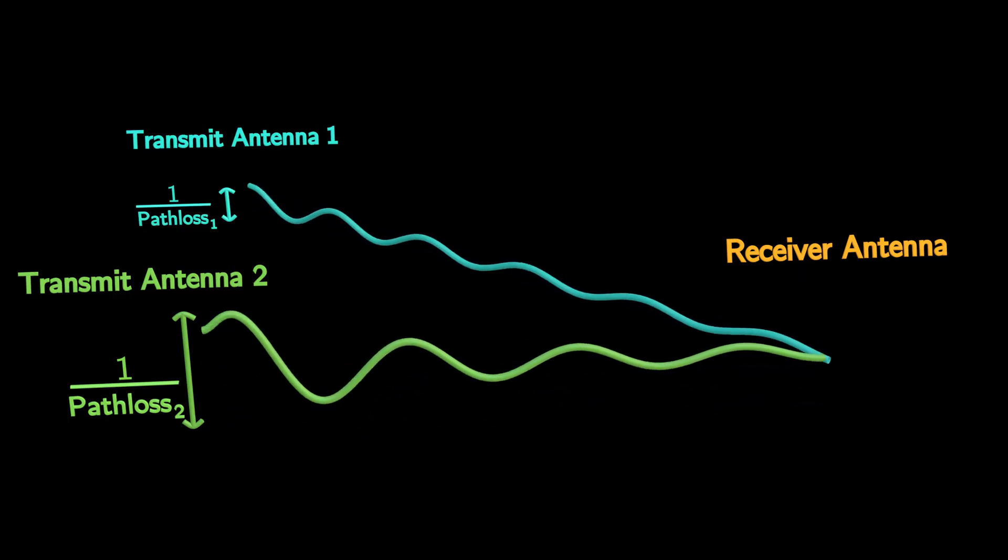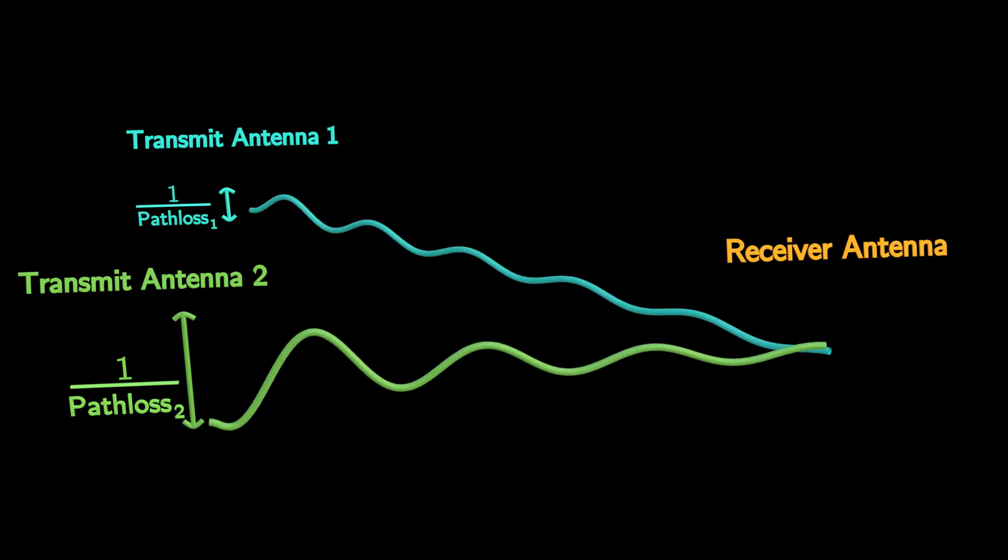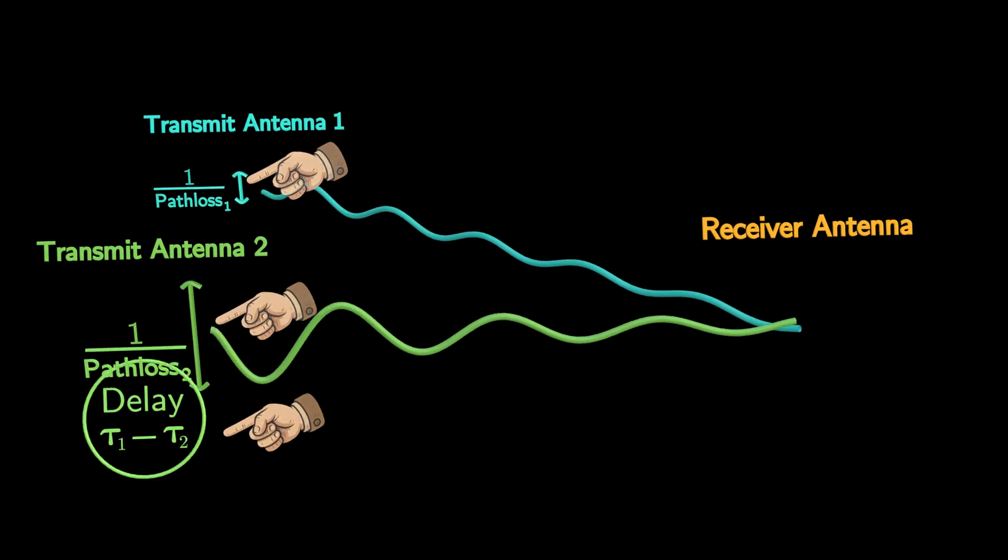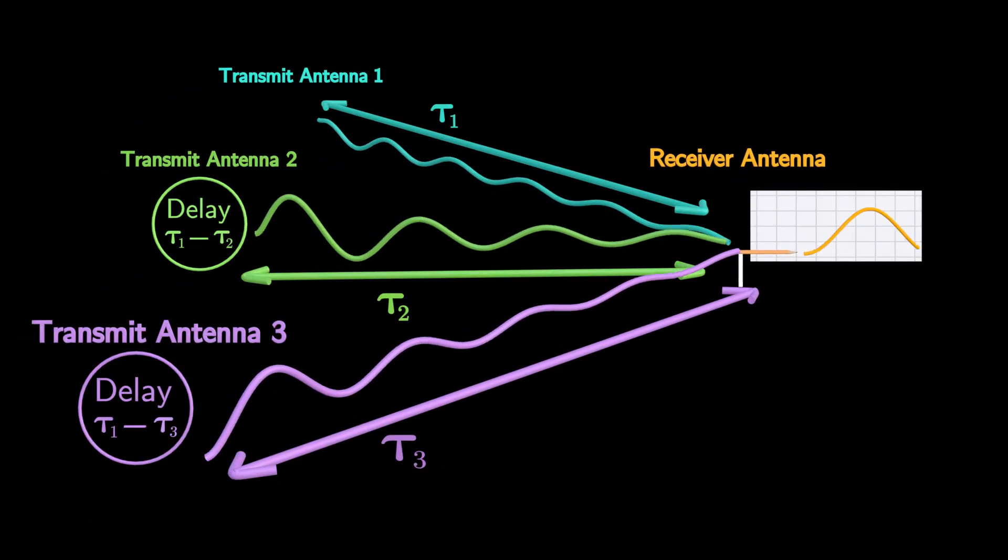So now you know what beamforming is. Beamforming is simply adjusting the timing and amplitude at each antenna. Adding more antennas further boosts the received signal strength.